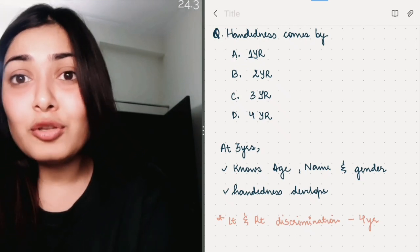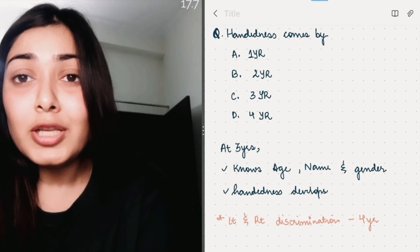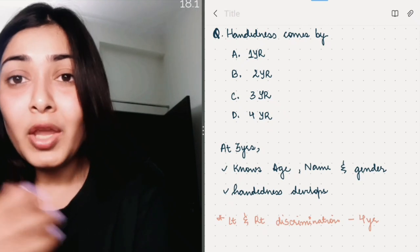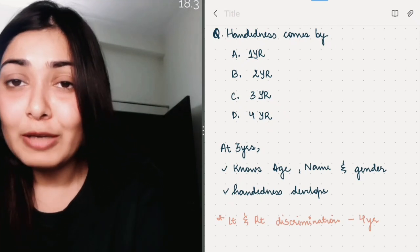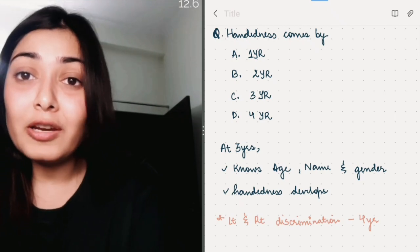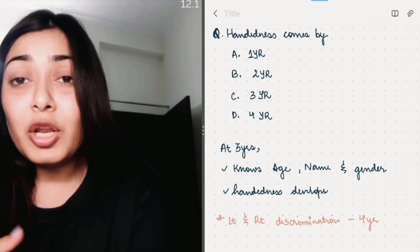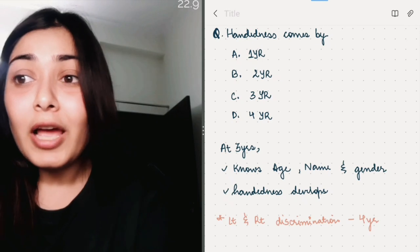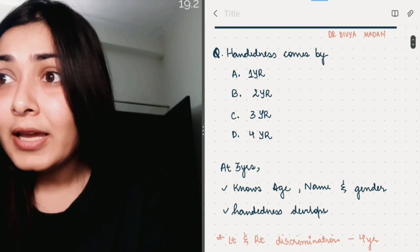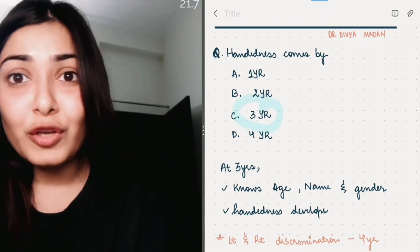I remember at 36 months of age, that is 3 years, the child knows 3 things. He can tell you his age, name and gender. And also handedness develops at the same time. One point where you can get confused is left and right discrimination. Discrimination from left and right, that comes by 4 years of age. So answer to this question is handedness comes by 3 years of age.